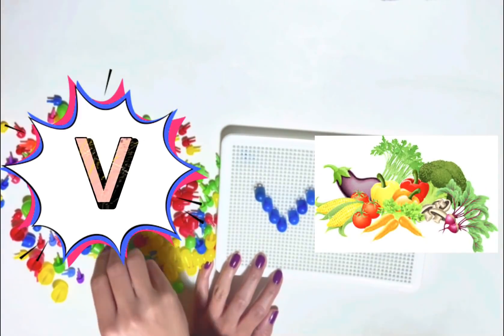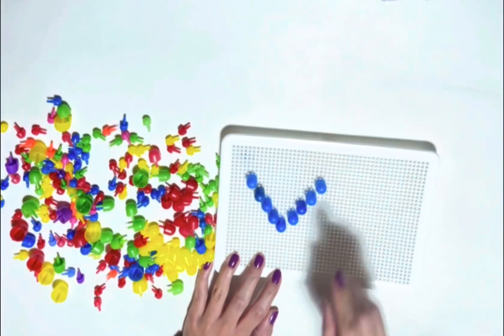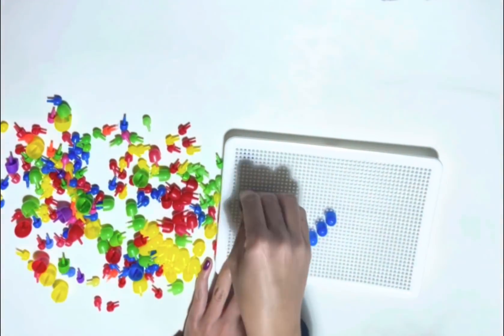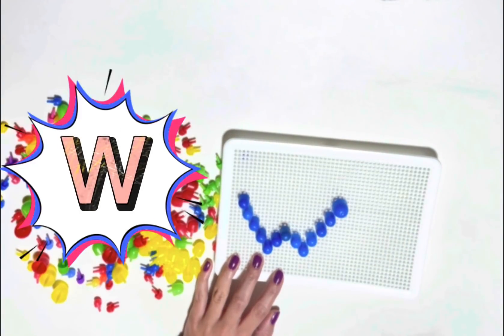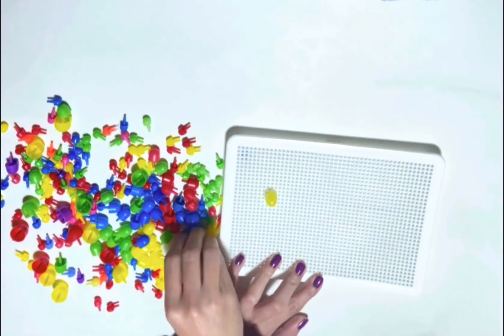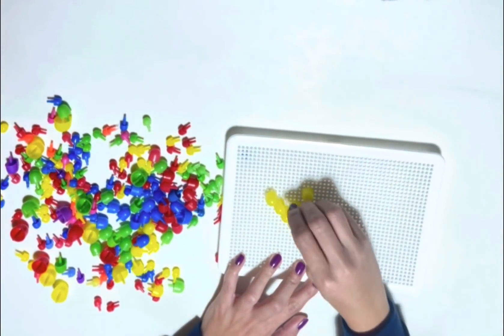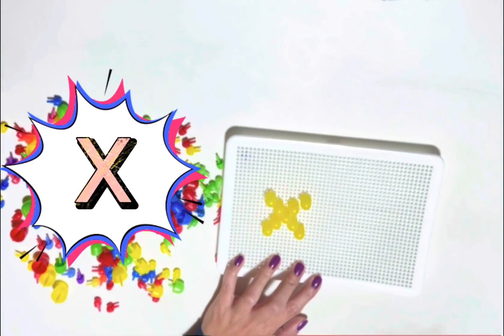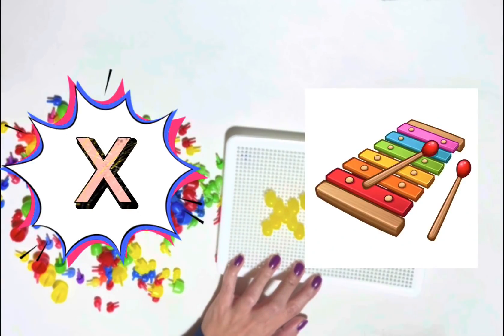U is for Umbrella. V is for Van. W is for Water. X is for Xylophone.